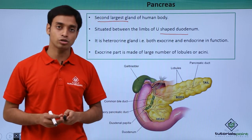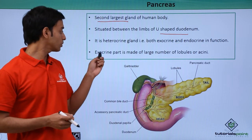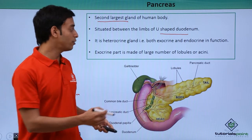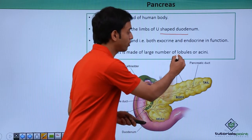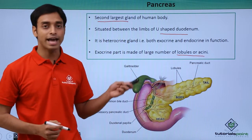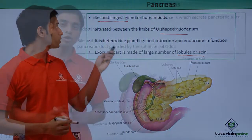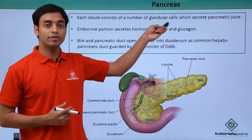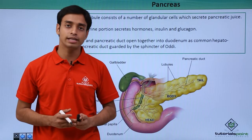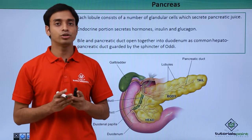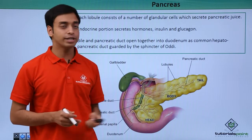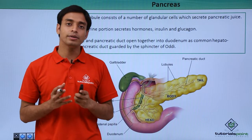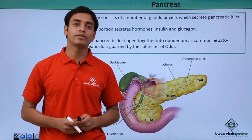The exocrine part of the pancreas is made up of a large number of lobules, also known as acini. Each lobule of the pancreas is made up of a number of glandular cells, and these glandular cells produce pancreatic juices.